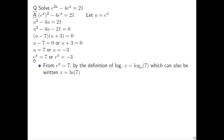For the first equation, e to the x equals 7: by the definition of logarithm, we can turn that into x equals log base e of 7. Or if you want to write that differently, you can use the shorthand notation — log base e can be replaced with ln. So you can have x equals ln of 7.